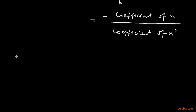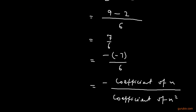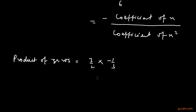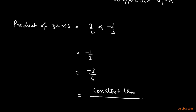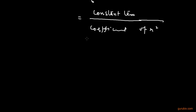Now for the product of zeros: 3 over 2 multiplied by minus 1 over 3 gives minus 1 over 2, which we can also write as minus 3 over 6. This ratio equals the constant term over the coefficient of x squared, so this relationship is also verified. This completes the solution.